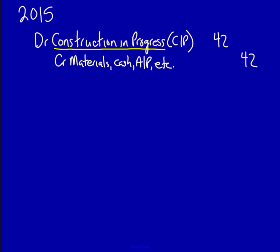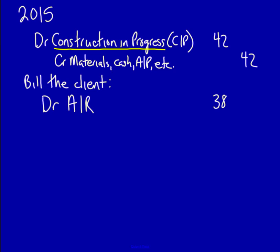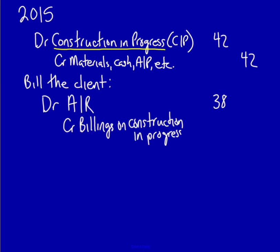Next we bill the client — this is called progress billings. The client agreed to be billed regularly when the contract was signed, because a construction company cannot fund all the materials, employees, architects, and government permissions on its own. The entry is a debit to Accounts Receivable for $38. Normally the credit would be sales revenue, but since revenue recognition is deferred, we credit an account called Billings on Construction in Progress — $38. This is a contra asset account grouped with CIP.